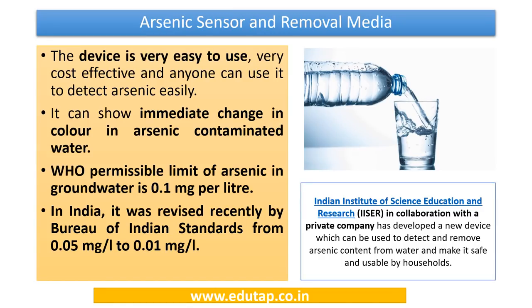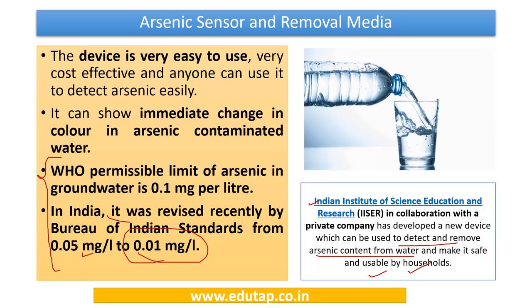A new device to detect and remove arsenic from water has been developed collaboratively by the Indian Institute of Science Education and Research (IISER) with private sector companies. As per WHO, the permissible limit for arsenic in groundwater is 0.01 mg per litre. In India, BIS revised the limit from 0.05 mg/L to 0.01 mg/L.